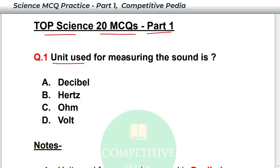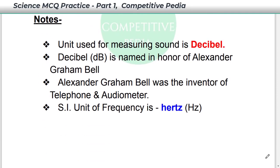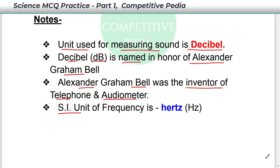First question: Unit used for measuring sound is? Your answer is option A, decibel. The unit used for measuring sound is decibel — its symbol is dB and it is named in honor of Alexander Graham Bell. Alexander Graham Bell was the inventor of the telephone and audio meter, and the SI unit of frequency is Hertz.